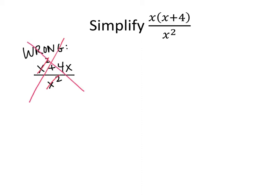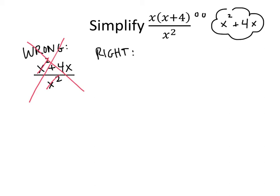Instead, what we want to do is divide top and bottom by the same number — by a common factor — so that when we divide top and bottom by that factor, the problem will get simpler. We can see that when we multiply it out, we got x squared plus 4x. Even though we've got an x squared on the top and an x squared on the bottom, we don't have a factor of x squared on the top. But what we do have is a factor of x on the top. So what we can do is divide top and bottom by x. On the top of our fraction, we're multiplying x times x plus 4, and then dividing by x — and when you multiply and then divide by the same number, you get back what you started with, which on the top is just x plus 4.